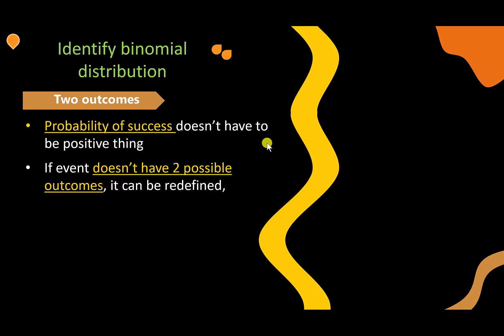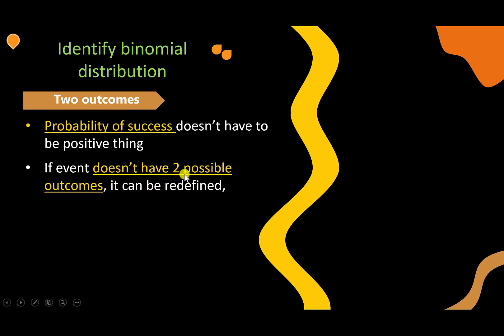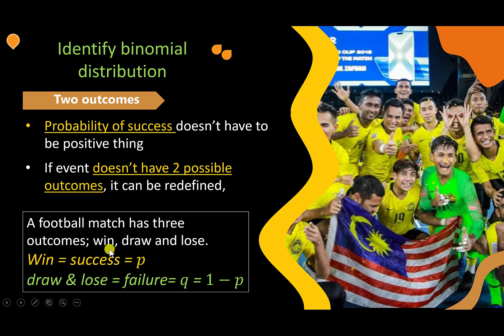We can also identify binomial distribution if it has two outcomes — that is, probability of success and failure. The probability of success doesn't have to be a positive thing. For example, it can be the probability of a defect in manufacturing. Defect is not positive, but we can assume it as the probability of success since we are interested in defect. If an event does not have two possible outcomes, it can be redefined. For example, a football match has three outcomes: win, draw, and lose. If we define win as success, then draw and lose together become the probability of failure.